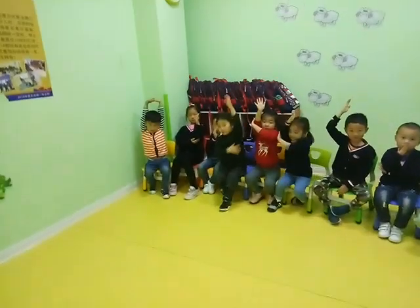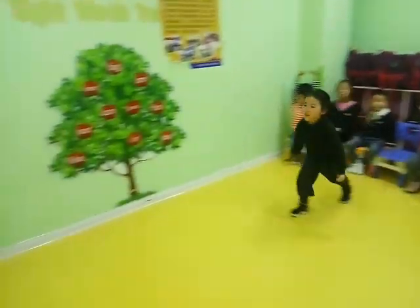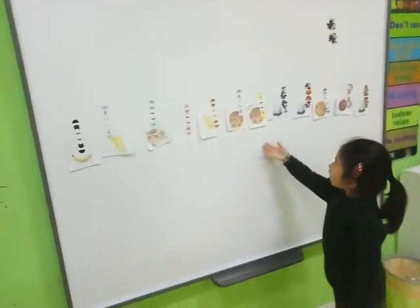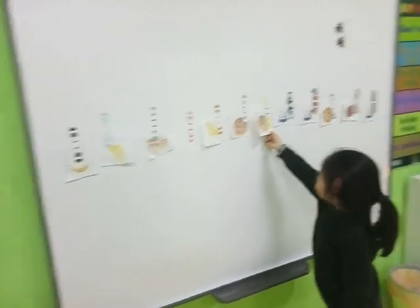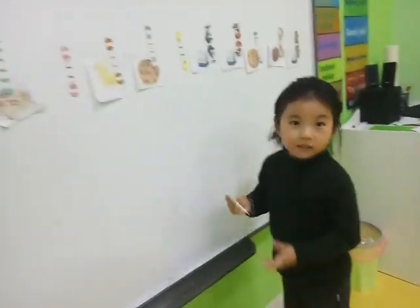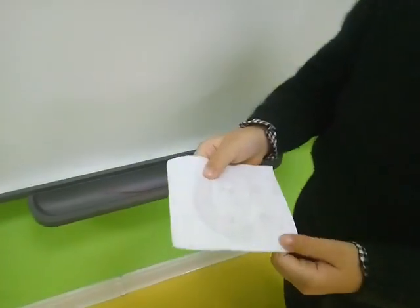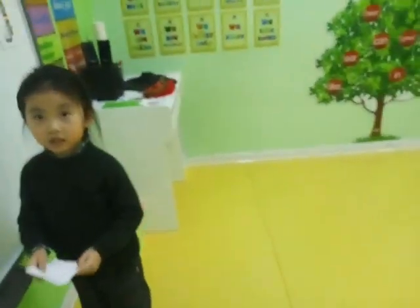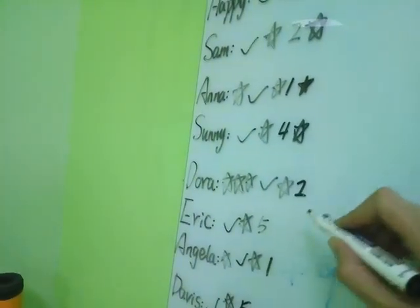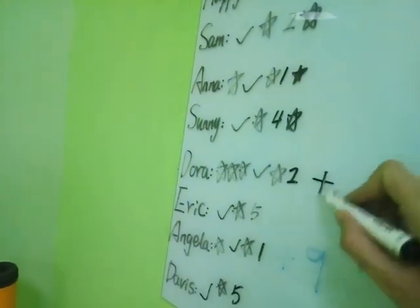Next is Dora. Come on, Dora. What food do you like? I like cookies. What number? Number 8. Dora got 8 points. Thank you, Dora, sit down. Dora got 8 points.